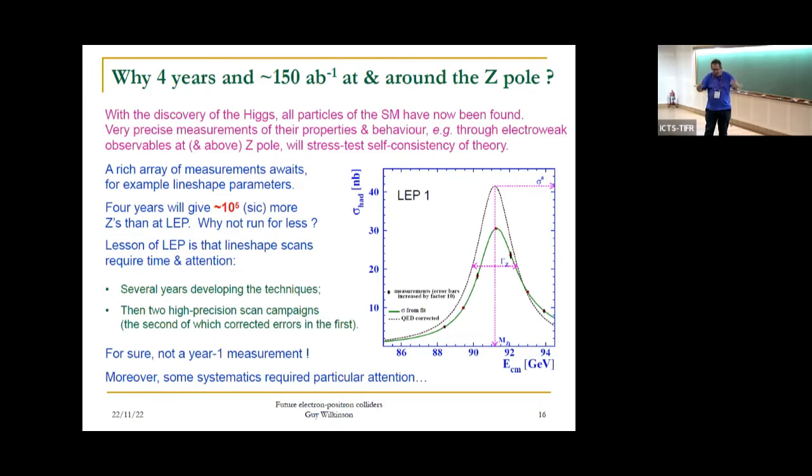So why do this? LEP's been done before. Why go back? Well, now we've discovered the Higgs and the standard model is complete. The emphasis is more and more on making precise stress tests of the self-consistency of the theory. With these data, you can make measurements of the parameters made at LEP with precision 500 times better. Nowhere else in particle physics is there the possibility of making such a huge step forward in sensitivity.